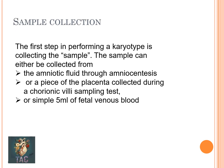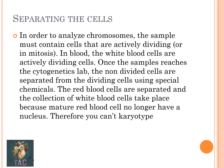The first step in karyotyping is sample collection. The sample can be collected from amniotic fluid through amniocentesis, or a piece of the placenta collected during chorionic villus sampling, or simply 5 ml of fetal venous blood. From these three sources we can take fetal tissue for karyotyping.